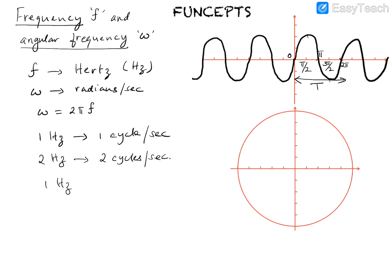One Hertz corresponds to Omega equals two pi times one, which is two pi radians per second. So the angular frequency Omega can be visualized as a phasor which is rotating.